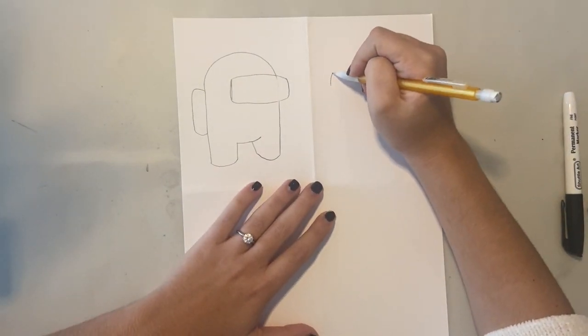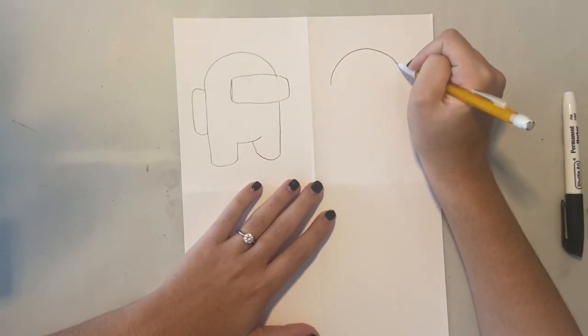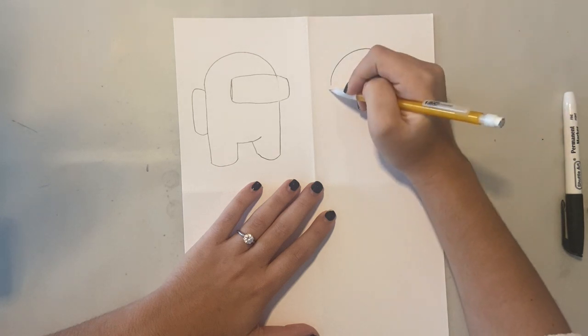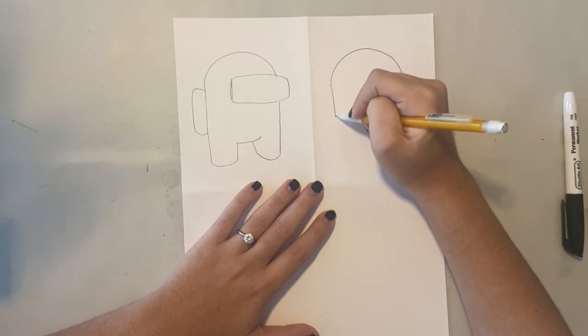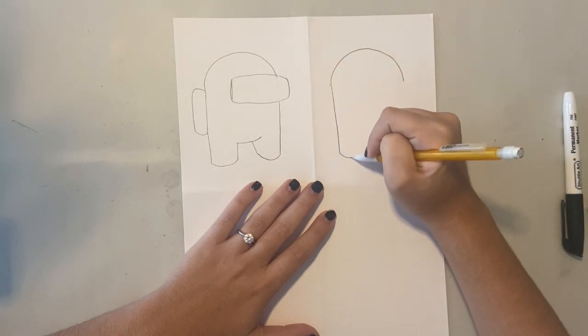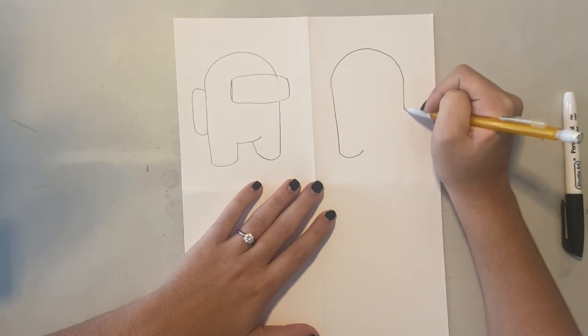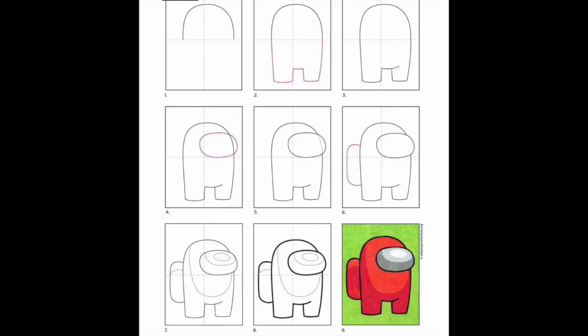Draw another Among Us character in every single box. You're going to have four Among Us characters. If you are stuck on the drawing, you can pause the video right here and look at this drawing guide. This will help you draw an Among Us character.